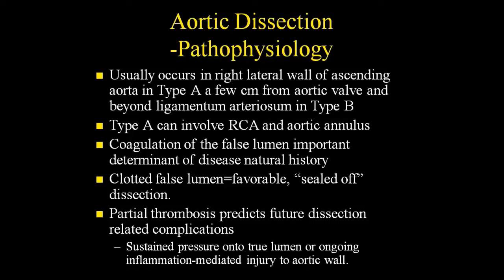For people where the false lumen has completely clotted off, there's a lower risk of future complications, especially in Type B. Where it's not completely clotted off on imaging, it does predict future events — whether from ongoing pressure, ongoing flow, or some other process. When it does clot off, the prognosis is a little better, compared to someone who's only partially clotted off, who is at risk of further aneurysmal dilatation, another dissection, or rupture.